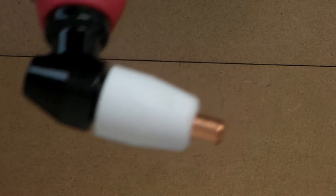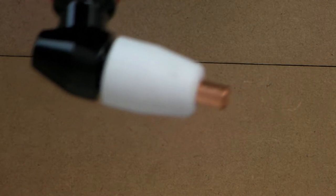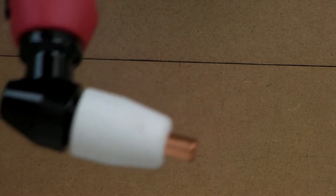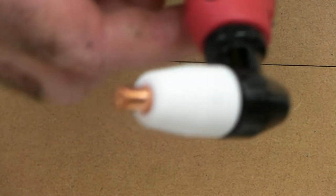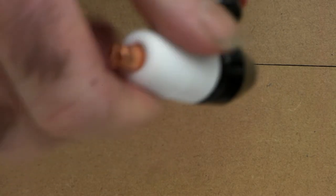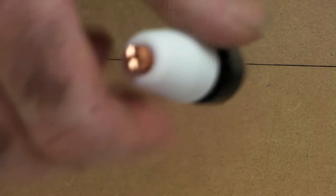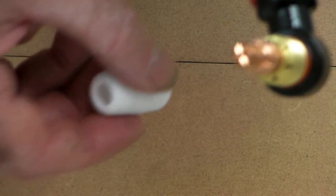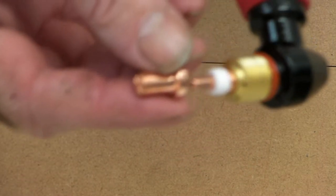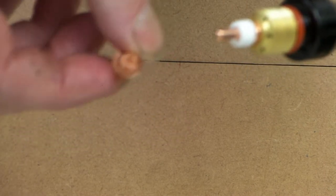They're all basically the same—a generic Chinese plasma torch that takes Cut 50 plasma torch consumables. It's a standard little torch that has a ceramic cup, just a standard ceramic cup.